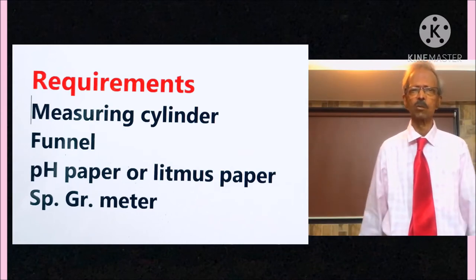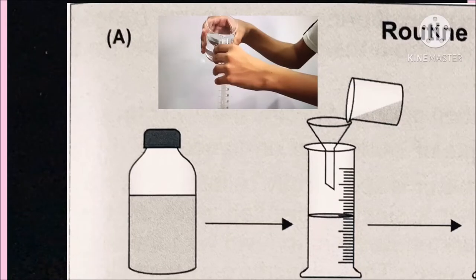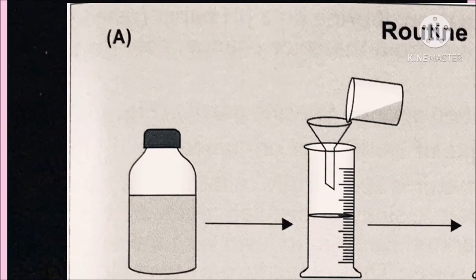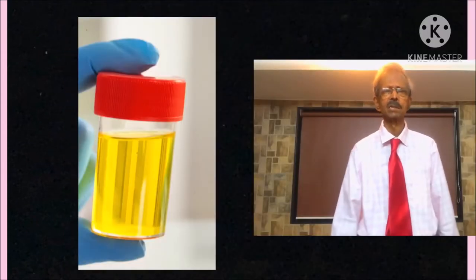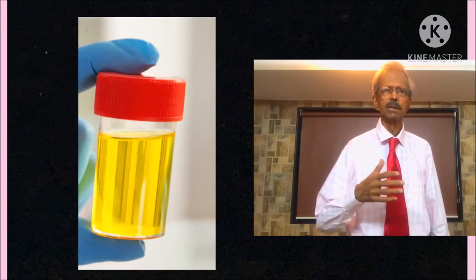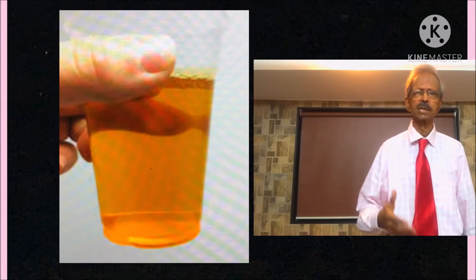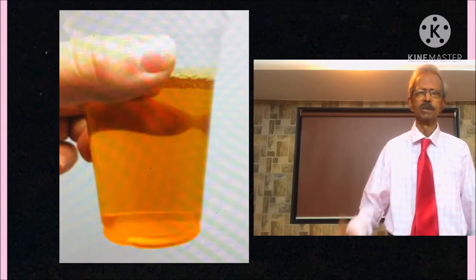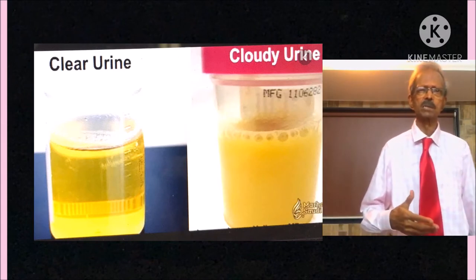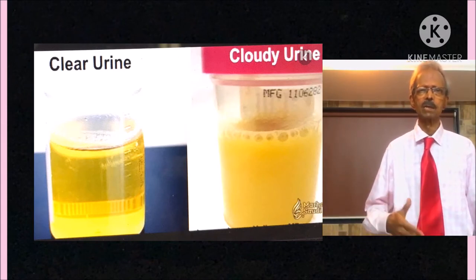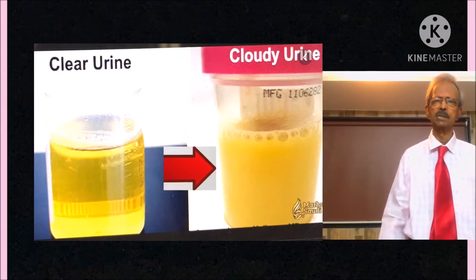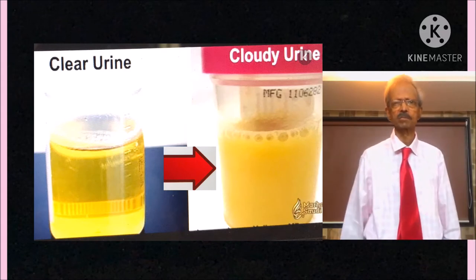Procedure is like this. First, measure volume of urine using a funnel and measuring cylinder and note volume of urine. Then, note color. For example, in this case, it is pale yellow and in this case, it is yellow. Note appearance of urine. For example, the appearance of urine on the left-hand side is clear and on the right-hand side, urine is cloudy or turbid.